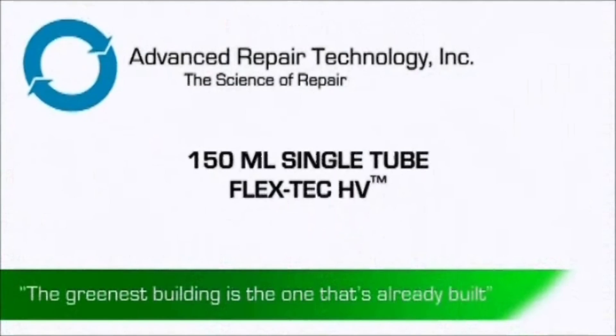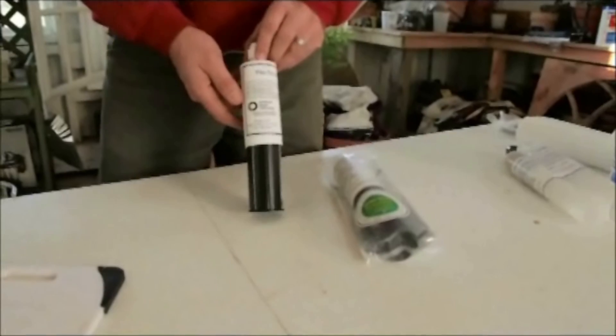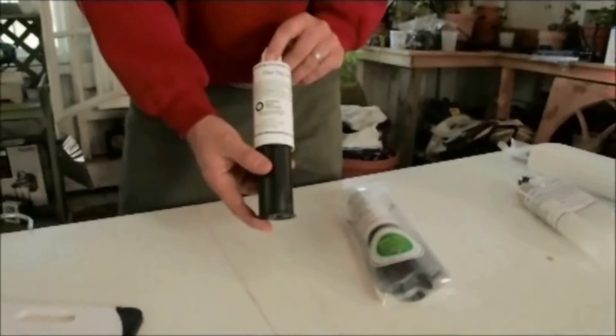For smaller projects and around-the-home repairs, Advanced Repair Technology has a smaller canister of the two-part FlexTech system that can be mounted into any standard caulking gun.